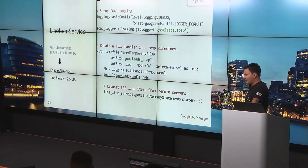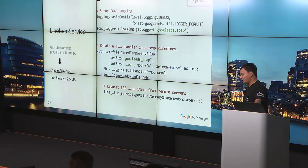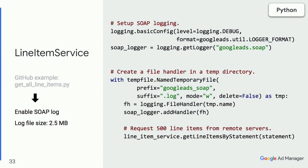Coming back to our simple application, I changed the logging level from info to debug, just to see the full SOAP requests and responses. The generated log file in this case is only 2.5 megabytes, but this is just a test ad network.